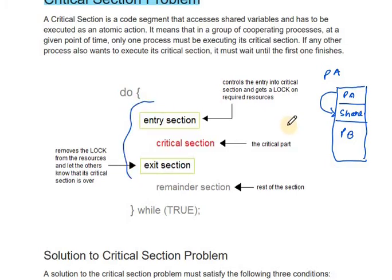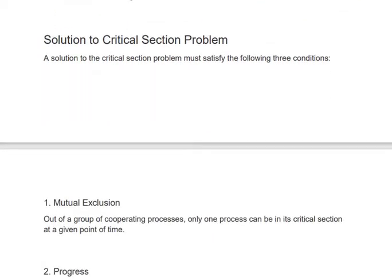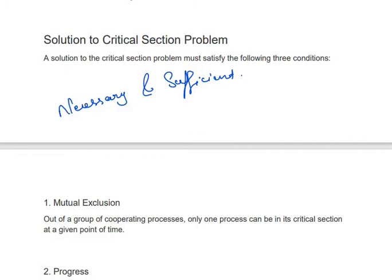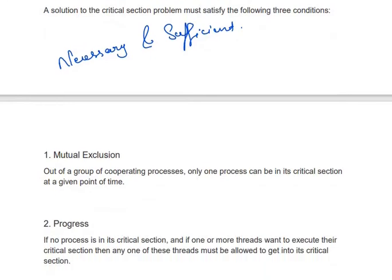After the exit section, the remainder section executes. So those are the parts of the critical section structure. There are different solutions to critical section problems which we will discuss one by one. For a critical section problem there are necessary and sufficient conditions. The first necessary and sufficient condition is mutual exclusion — in cooperating processes sharing the same shared region, only one process can be in its critical section at a given point of time.